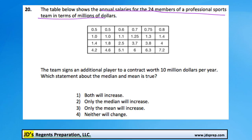Let's start with the median first. Since we've got 24 numbers here, to find the median — that means the middle number — we'd count from both ends.